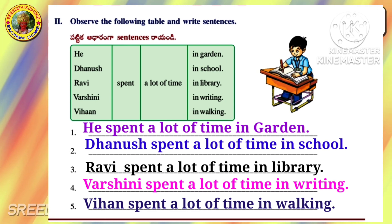Observe the following table and write sentences. First one: I tried my best to grow the seed. Second one: I tried to learn English. Third one: I tried to learn Hindi. Fourth one: I tried to grow plants well. Fifth one: I tried to avoid mistakes.